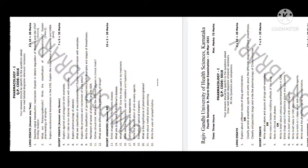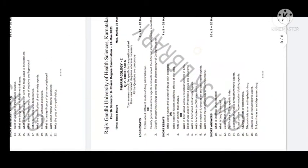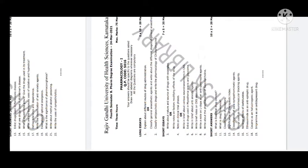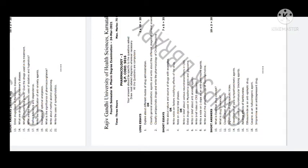Explain the pharmacology of atropine — important. Then explain neurohormonal transmission in the central nervous system, with importance of dopamine and GABA. Now let's discuss 2021 paper: explain the different routes of administration, classify general anesthetic agents and different stages of general anesthesia.